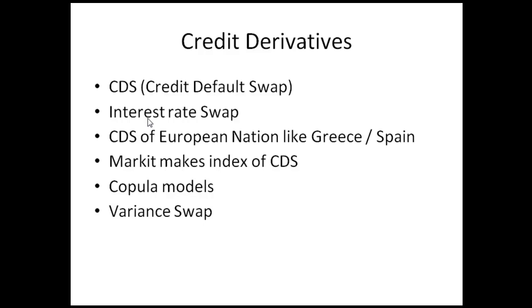There are also interest rate swaps — fixed versus floating. You may need to go through credit default swap pricing for European nations like Greece and Spain. Suppose the pricing of a CDS goes down and they give you four options to choose from — one might be that something positive happened, like austerity measures were taken or a loan was granted, meaning if something positive happens CDS prices will fall. There are also CDS indexes like emerging-nation CDS indexes or bond-market CDS indexes.